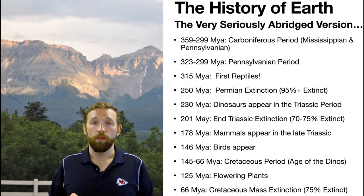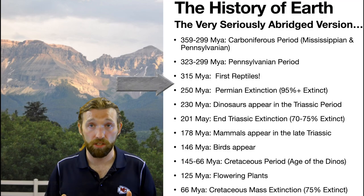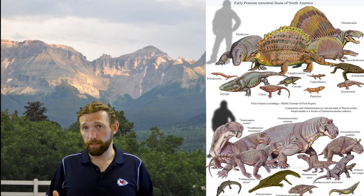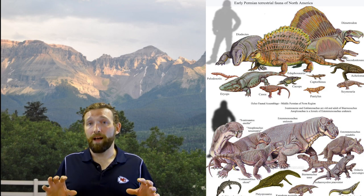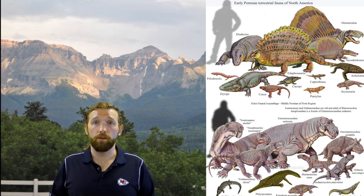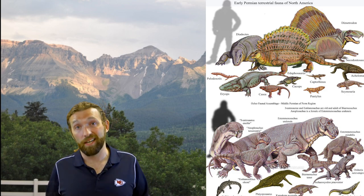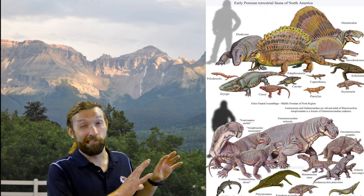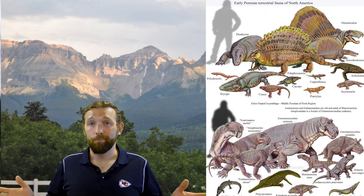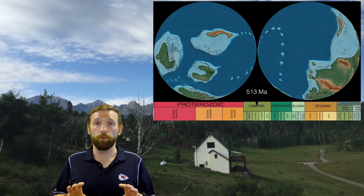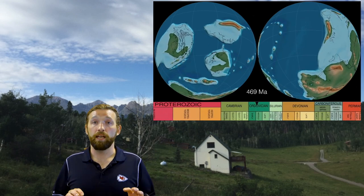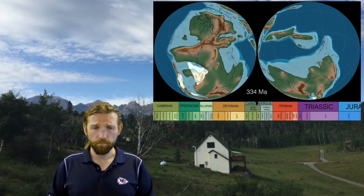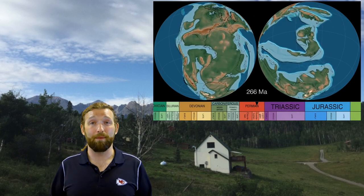That gets us into the Permian, when we start getting things that look like dinosaurs — basically just large reptiles and proto-dinosaurs, things that could move fairly quickly. If you went back during this time you probably would have thought you were looking at dinosaurs, but paleontologists say they're not exactly dinosaurs yet — they're getting there. The earth now looks radically different than it did during the Ordovician, Devonian, and Silurian; we are full-on life on land.